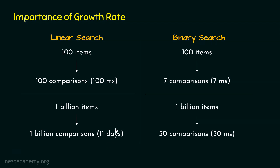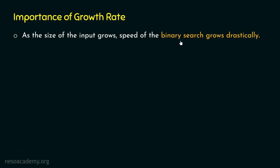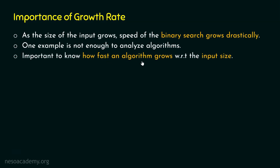So clearly, one example cannot tell us how fast an algorithm is compared to another algorithm. As the size of the input grows, the speed advantage of binary search grows drastically. Therefore, one example is not enough to analyze algorithms. We need to know how fast an algorithm grows with respect to the input size.